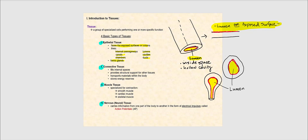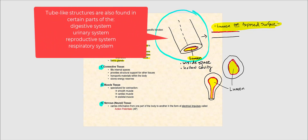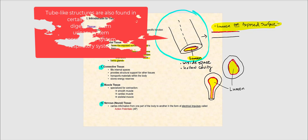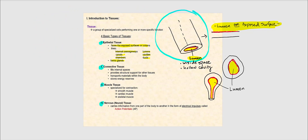I've made a drawing of a tube-like structure. Think of a blood vessel or a digestive tract, which have a tube-like structure. We want to find where epithelial tissue is — the tissue facing the exposed surfaces or the lumens. A lumen is the inside space, the hollow cavity, the center portion of this tube-like structure.